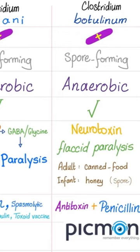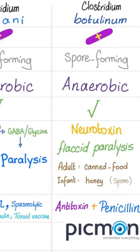Clostridium tetanii — don't forget the exotoxin called tetanospasmin, because it causes spastic paralysis. How come? Because it inhibits the inhibitory neurotransmitters. When you inhibit the inhibitory, you are excitatory.